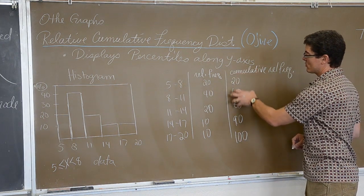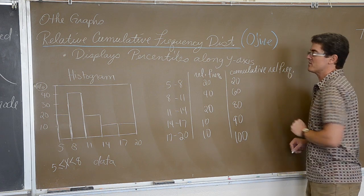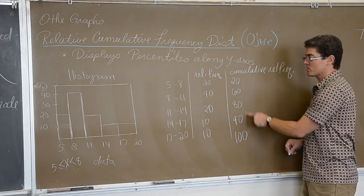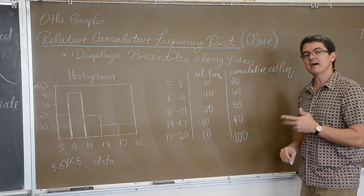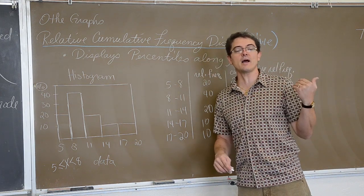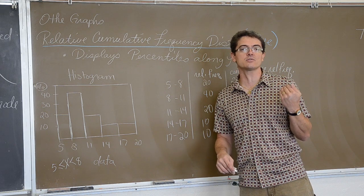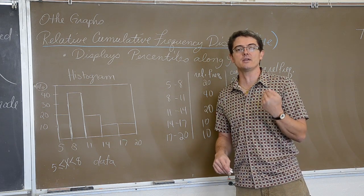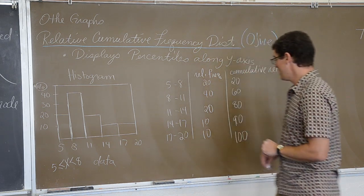So, when you do a cumulative relative frequency distribution, those percents are going to add up to 100. That is what allows you to observe on the y-axis your percentiles. Because if you are all the way to the right and you are the biggest piece of data, you are larger than 100% of all the other data points. So, we are going to make a graph out of this chart.